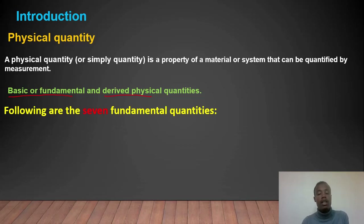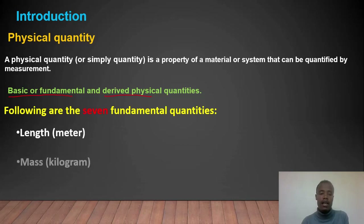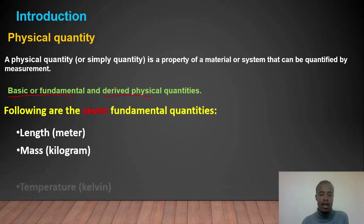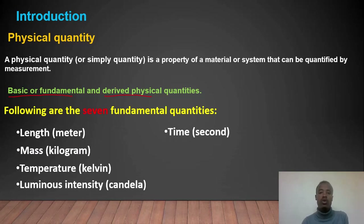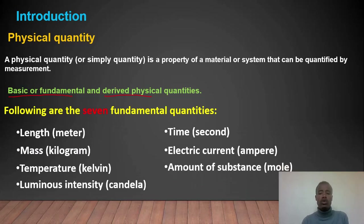The seven fundamental physical quantities are: length, measured in meters; mass, measured in kilograms; temperature, measured in Kelvin; luminous intensity; time, measured in seconds; electric current, measured in amperes; and amount of substance, measured in moles.